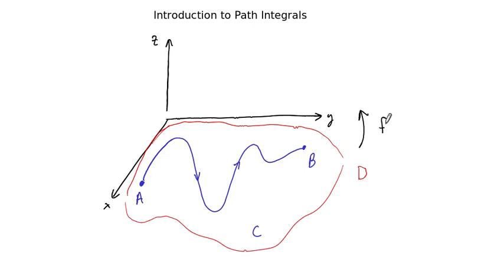So a function F. And F, of course, assigns a height to every point in the entire domain D. But what we want to do is restrict the function F to this path, to the path C. And then just draw the graph of the function F that sits above this curve.